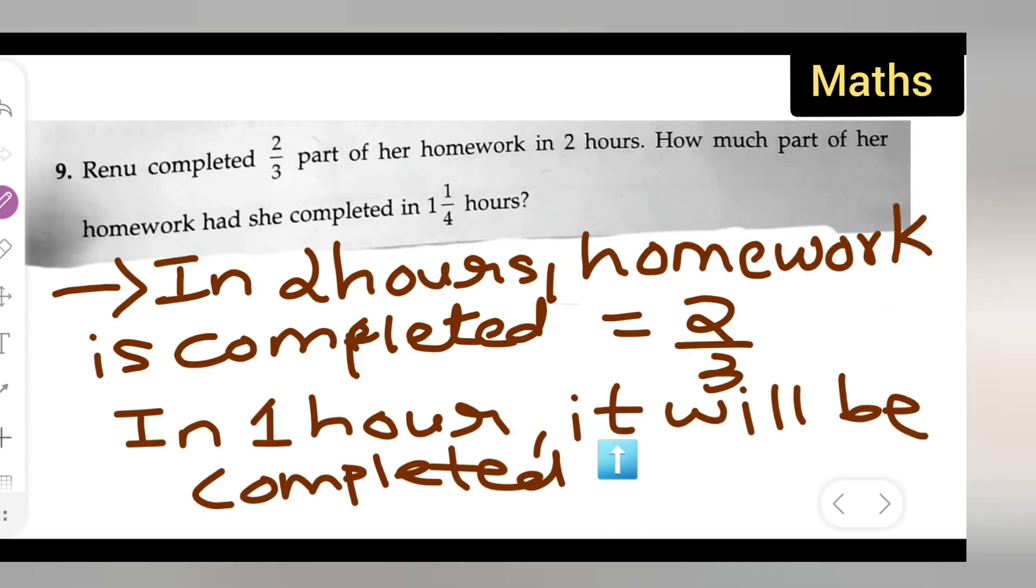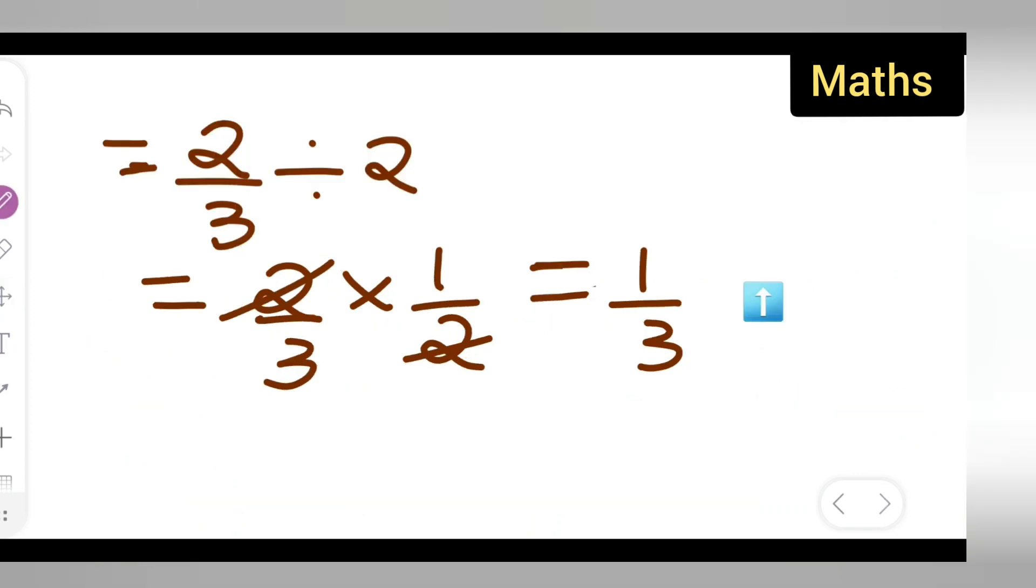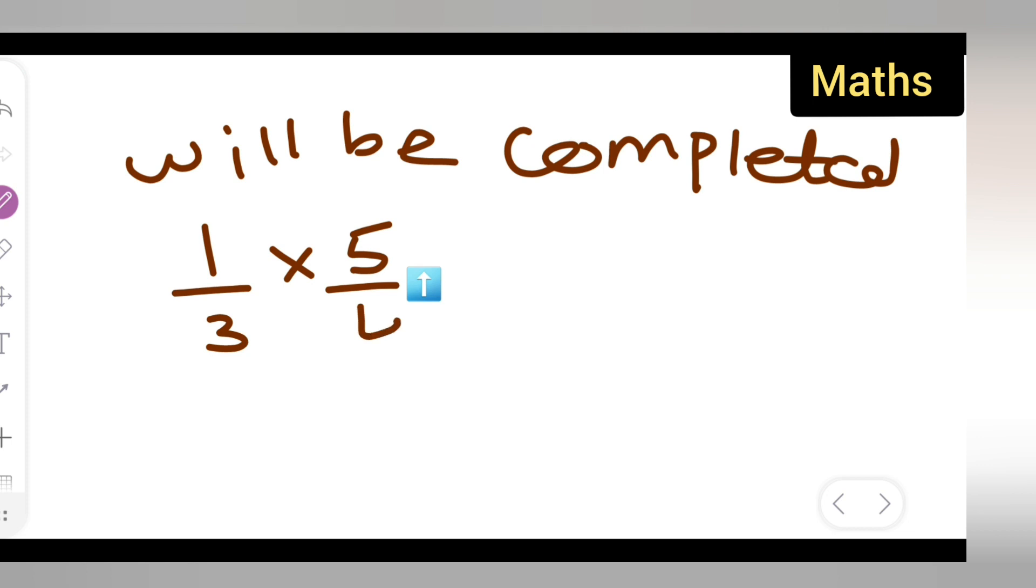Now we found out for 1 hour. Now for 1¼ hours we have to find out separately. In 1¼, it will be equal to 5/4 hours. It will be completed—you'll have to multiply 1/3 multiplied by 5/4. 5 ones are 5, 4 threes are 12. So for 1¼ hours, it will be completed 5/12 part of it.